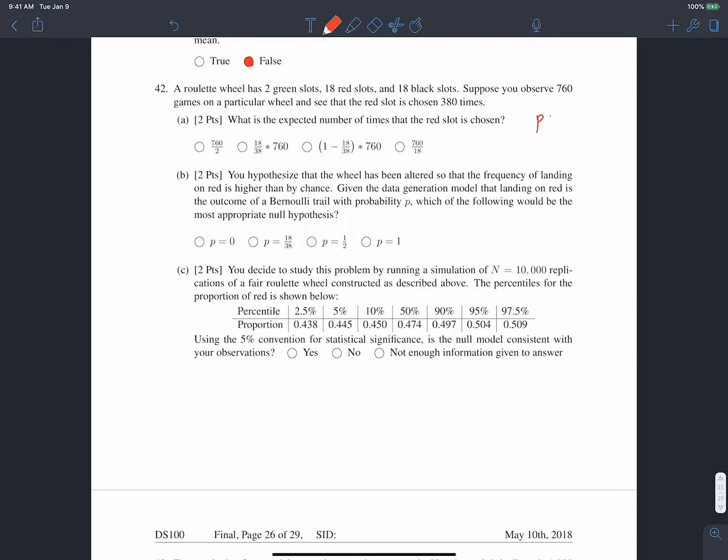Well, first, we want to find the probability that on any one spin, it's the red slot. Well, so there's 18 red outcomes over 18 plus 18 plus 2, which is 38. So on any one spin, we'd expect it to be red, 18 out of 38 times. OK, and now if we assume each of the spins are independent, we can just multiply this quantity by 760, which gives us 18 over 38 times 760, which is the second option.